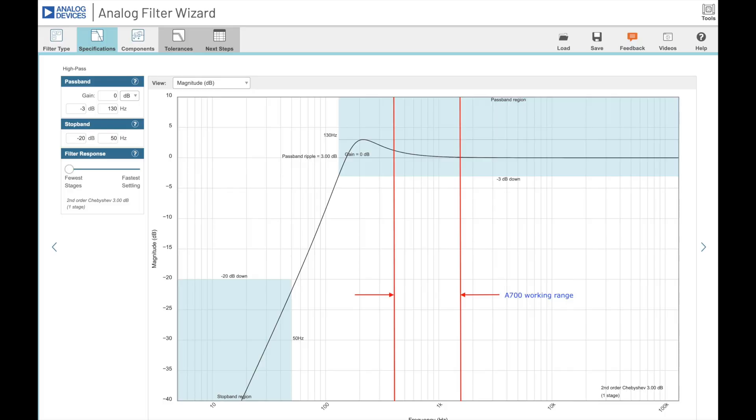Here's about what I think this filter is doing using the analog devices website. The cutoff frequency is well below the working range of the signal.